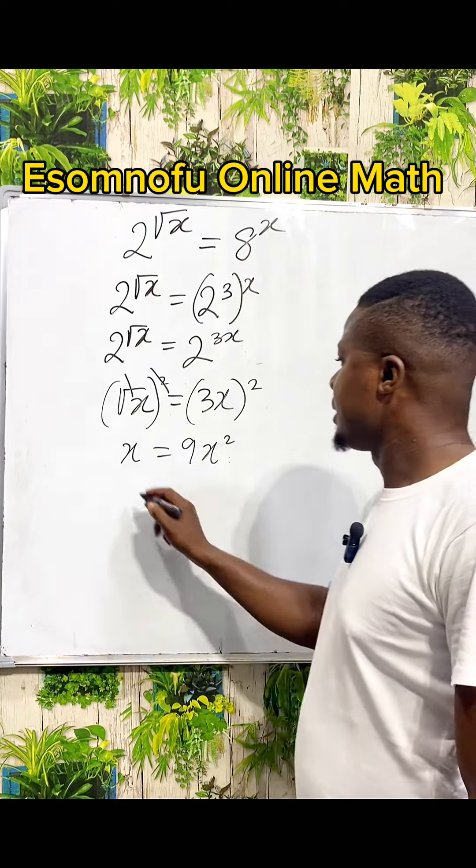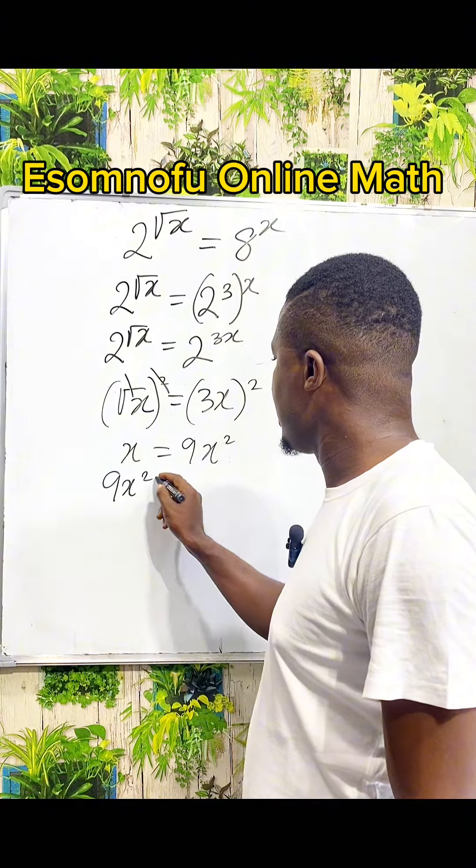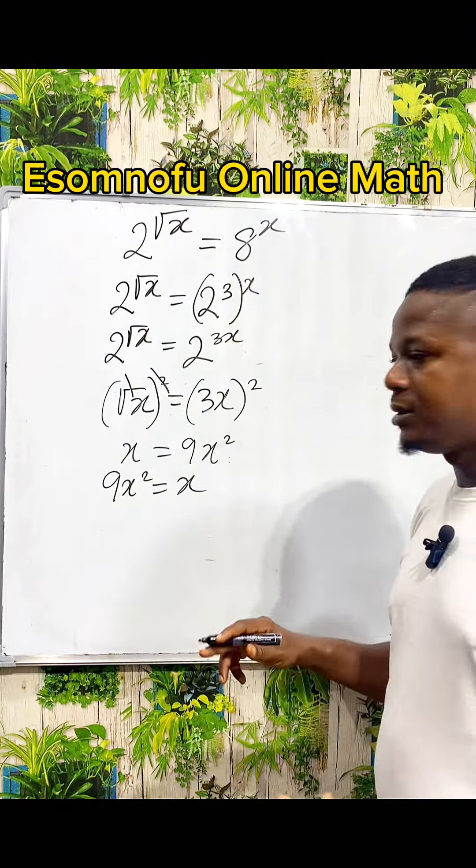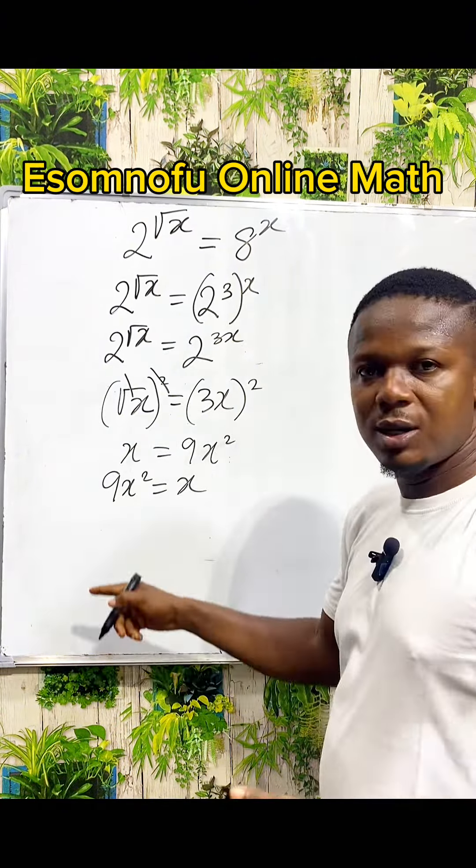I can still call it 9x² = x. That is something. Bringing this x to the left, we have 9x² - x = 0.